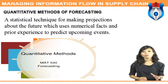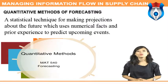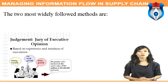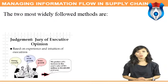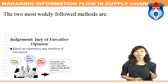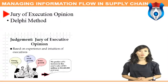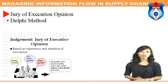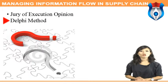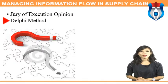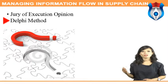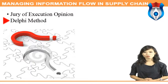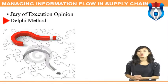A statistical technique for making projections about the future uses numerical facts and prior experience to predict upcoming events. The two main types of quantitative forecasting used by business analysts are the explanatory method, which attempts to correlate two or more variables, and the time series method, which uses past trends to make forecasts. The two most widely used qualitative methods are the jury of executive opinion method and the Delphi method, in which experts are sent questionnaires and responses are summarized without disclosing identities.